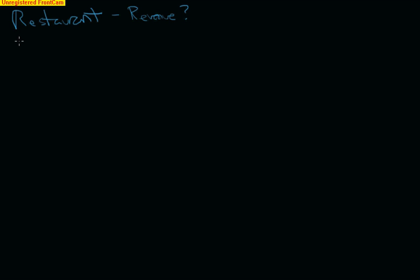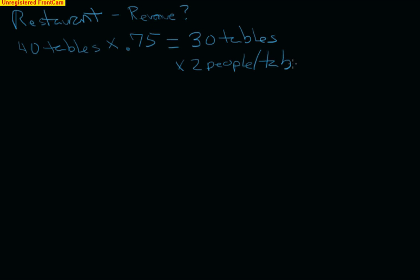And I know that it has 40 tables on average, and these 40 tables are about 75 percent full. So I kind of know that on average I have 30 tables effectively being used in this restaurant. And let's just say each table has another assumption: two people per table.